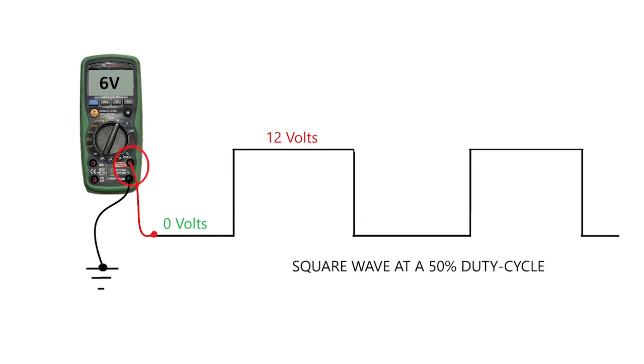If I were to view a square wave waveform, like the one you see on the screen here, it's clear to see that the voltage travels from 0 to 12 volts repeatedly. Now, if that happened at a fixed 50% duty cycle — meaning it spent half the time at 12 volts and half the time at 0 volts — the digital volt-ohm meter is going to average out those samples and plot a steady-state voltage on the display of approximately 6 volts. So the takeaway is I never really know if I'm staring at a 6-volt fixed voltage waveform or a 50% duty cycle 0-to-12-volt square wave signal.